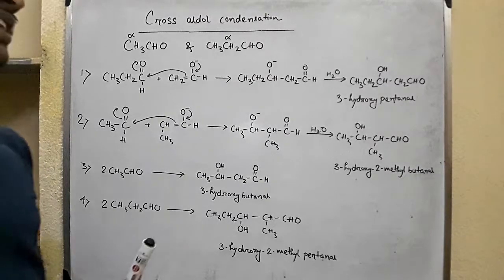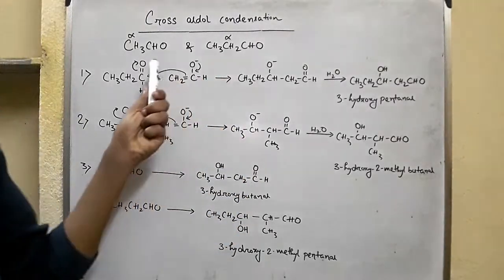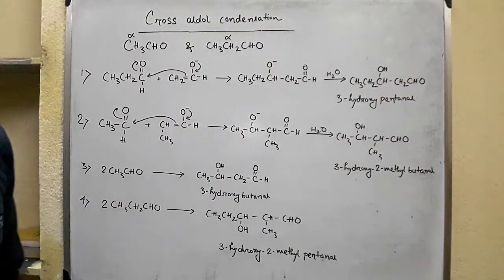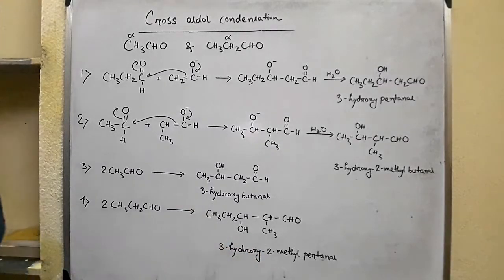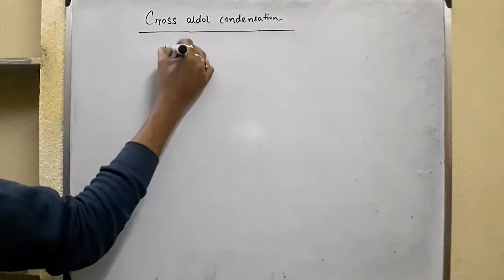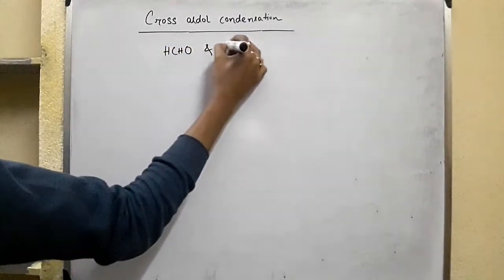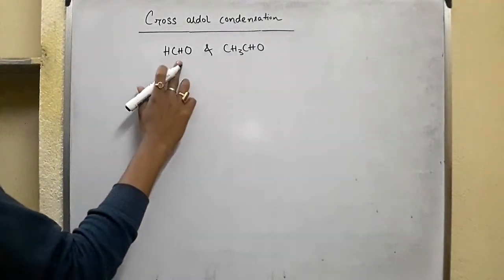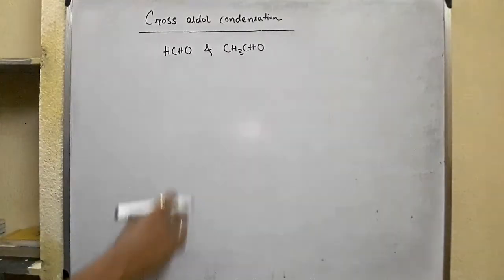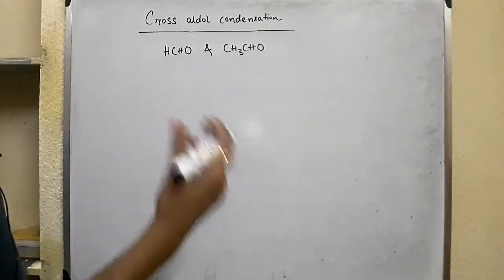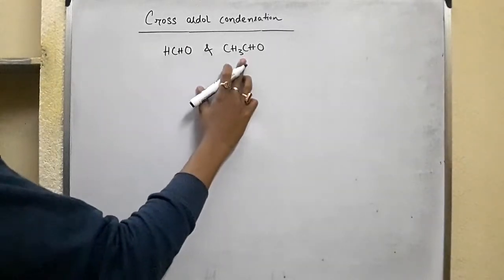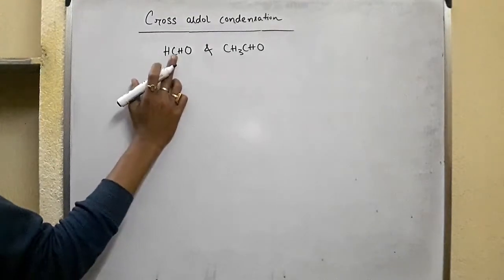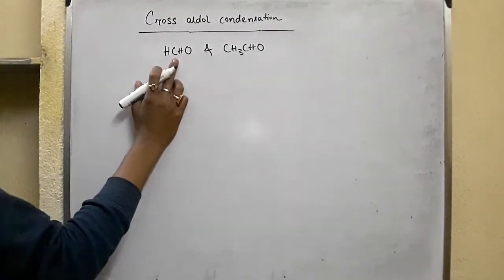Cross aldol condensation is useful when one of the carbonyl compounds does not contain any alpha hydrogen, so it cannot form the enolate ion and therefore cannot undergo self-condensation. For example, formaldehyde and acetaldehyde: formaldehyde cannot enolize because it has no alpha hydrogen, and acetaldehyde can form the enolate ion, which will attack the electrophilic carbonyl group of the formaldehyde.